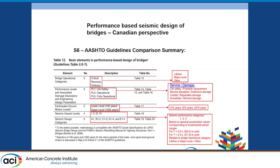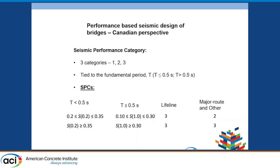There are three seismic performance categories: one, two, and three. For seismic performance category one, no seismic analysis is required. What you do need to do is provide some detailing which is in line with seismic performance category two, but for SPC1 we don't do any seismic analysis.